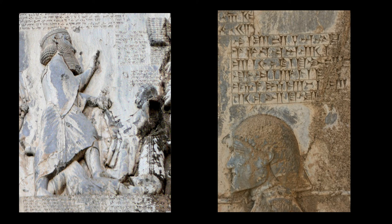Column 5, Section 71: "King Darius says: The following is what I did in the second and third year of my rule. The province called Elam revolted from me. An Elamite named Atamaita they made their leader. Then I sent an army unto Elam. A Persian named Gobryas, my servant, I made their leader. Then Gobryas set forth with the army; he delivered battle against the Elamites. Then Gobryas destroyed many of the host and that Atamaita, their leader, he captured, and he brought him unto me, and I killed him. Then the province became mine."